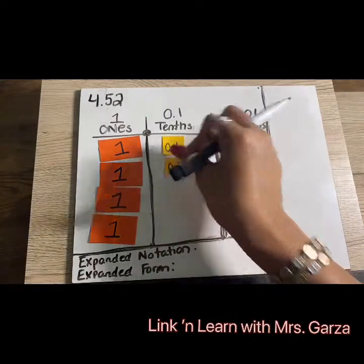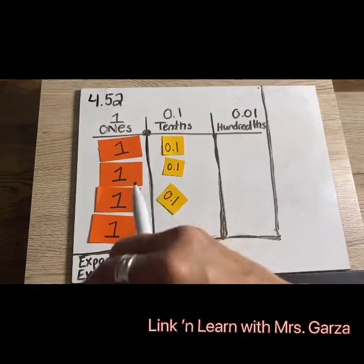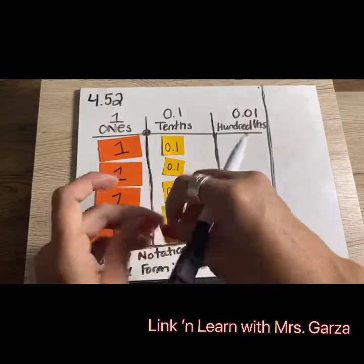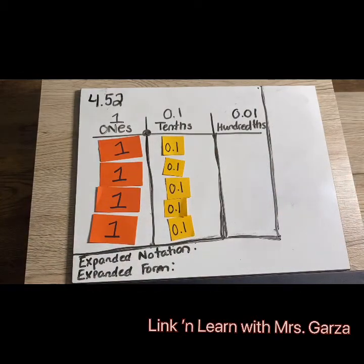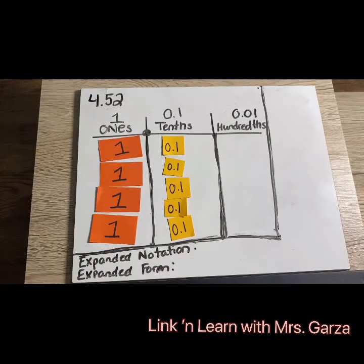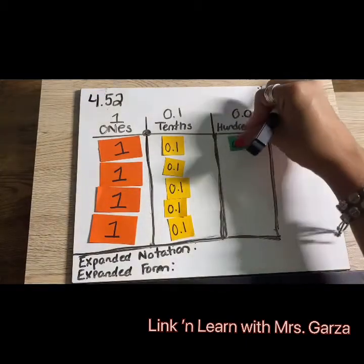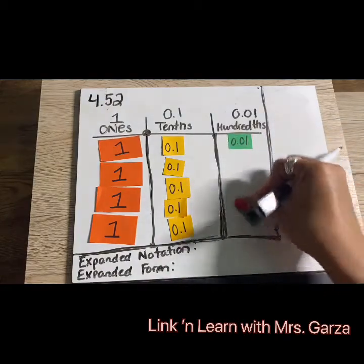Here's another dime, 30. Here's another dime, 40. And here's another dime, 50. So five tenths, which is 50 cents. Then we have our hundredths — we have two hundredths. The value is two cents. Think of these as pennies. We have one penny and another penny.